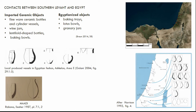Focusing on southern Levant, Brown distinguished between imported ceramic objects and Egyptianized objects — meaning Egyptian morphology fashioned in extremely coarse fabric with a significant quantity of vegetal inclusions. Among the imported vessels he mentioned fine ware ceramic bottles and cylindrical vessels, wine jars, lentil-shaped bottles, and baking bowls. These types of vessels are particularly common in sites along the south Levantine shoreline, such as Tel Erani, Besor, and Amazia. The Egyptianized objects include baking trays, bread bowls, lotus bowls, and granary jars. Brown suggested an analytic food waste associated with at least some elements of the late EB1 population in southern Levant.